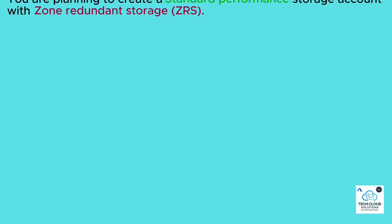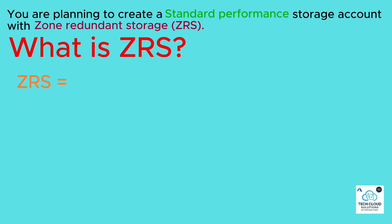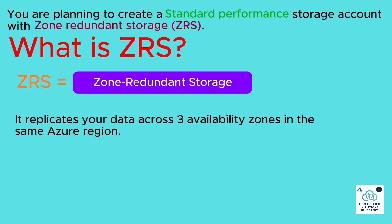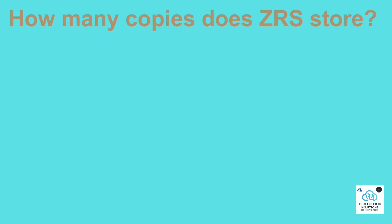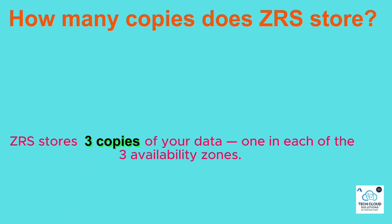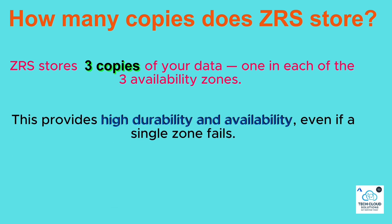You are planning to create a standard performance storage account with Zone Redundant Storage (ZRS). ZRS replicates your data across three availability zones in the same Azure region. Each availability zone is an independent physical location with its own power, cooling, and networking. ZRS stores three copies of your data — one in each of the three availability zones — providing high durability and availability even if a single zone fails.